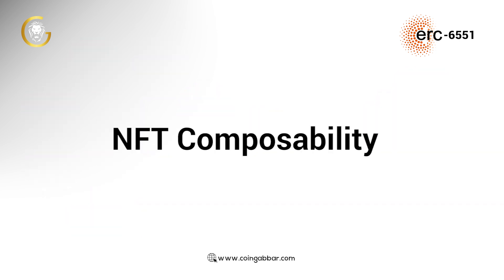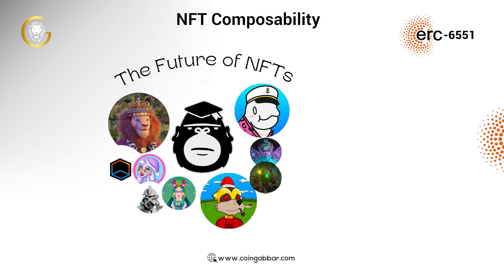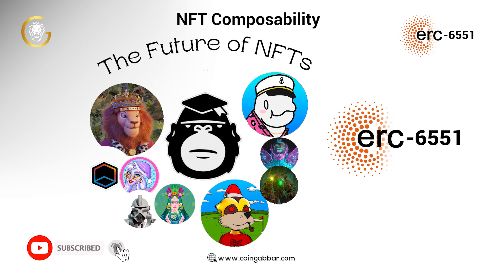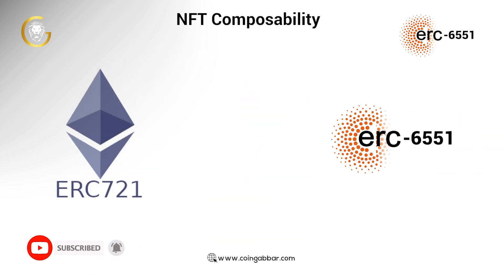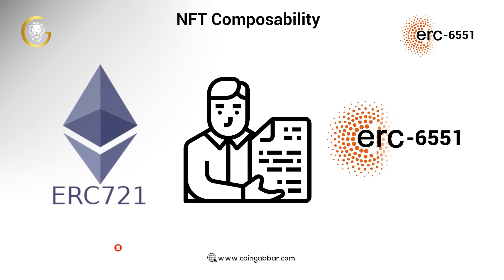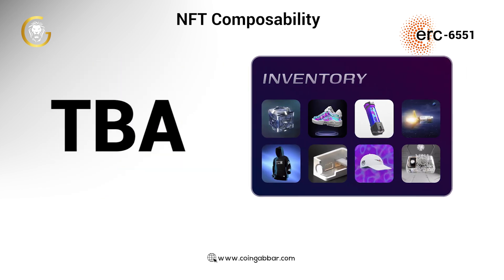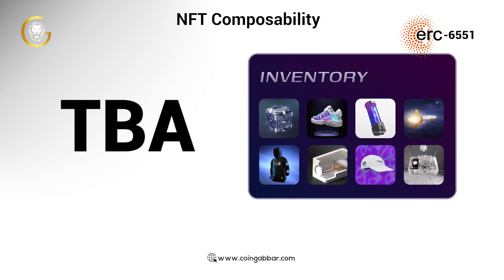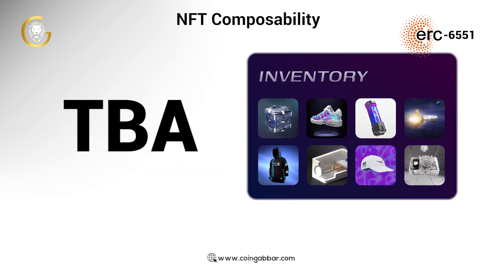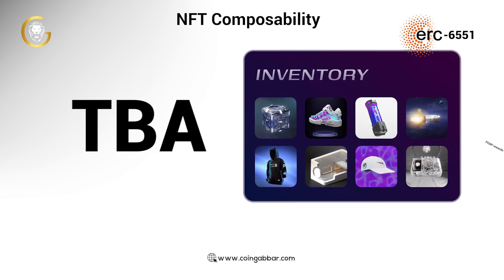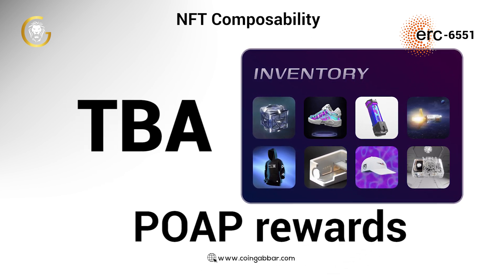NFT Composability. Token-bound accounts enhance the composability of NFTs by enabling an ERC-721 token and its associated assets to be bundled into a single profile. A TBA may be an inventory system containing various types of assets, all of which contain logic spanning from the automatic staking of NFTs to the collection of POAP rewards.